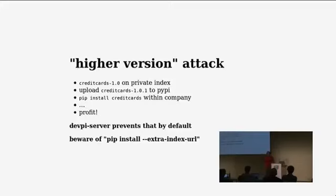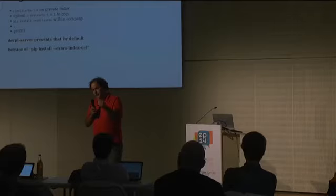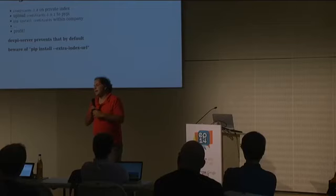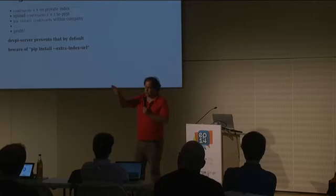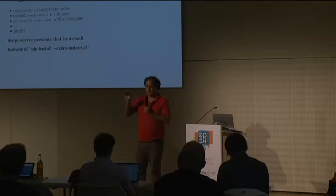DevPI version 2.0 prevents that because by default, if you upload anything to a DevPI private index, any further lookup — even if you inherit from the PyPI cache — will be prohibited. You have to whitelist it. If you have a package that comes from PyPI.org because it's an open source release of your company, then you have to whitelist it. Otherwise, PyPI is basically ignored. If you install from the production index and the package is not whitelisted, PyPI is not considered because there is already a package in your private index.